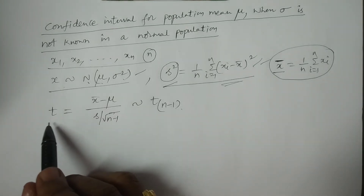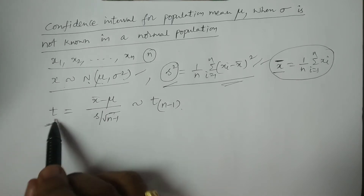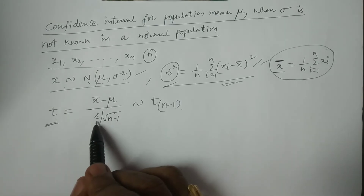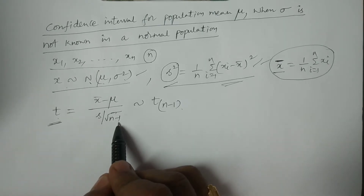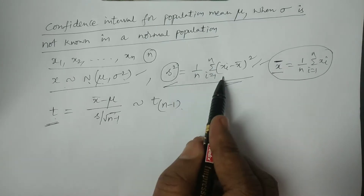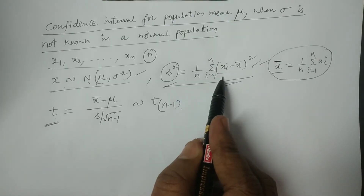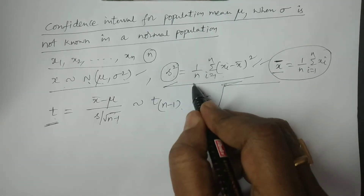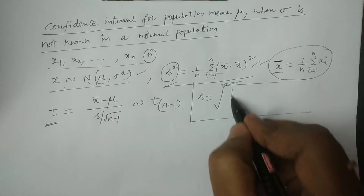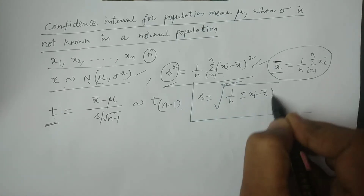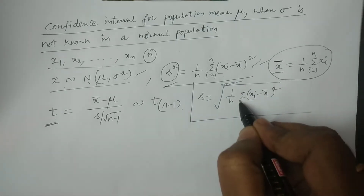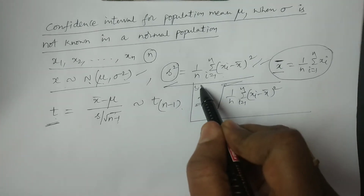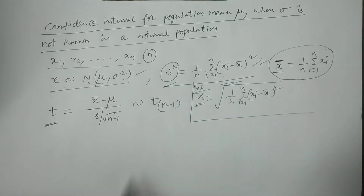The T statistic is T = (X̄ − μ) / (S / √(n−1)), where S is the sample standard deviation: S = √[(1/n) · Σᵢ₌₁ⁿ (Xᵢ − X̄)²]. This is the formula of sample standard deviation. This T follows a T distribution with n−1 degrees of freedom.